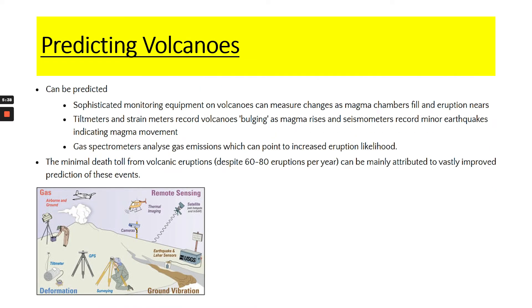It is much easier with volcanoes — we can predict them pretty well. We can use specialised monitoring equipment such as looking at the way the magma chamber is filling and the change in the bulge of the landscape using tilt meters and strain meters. We can also use seismometers to record minor earthquakes because they can indicate magma movement under the surface, and we can analyse gas emissions to see if there's a change in the types or concentration of gases. The reason volcanoes haven't actually caused many deaths in the last 100 years is due to this high-tech monitoring and prediction approach being pretty successful.